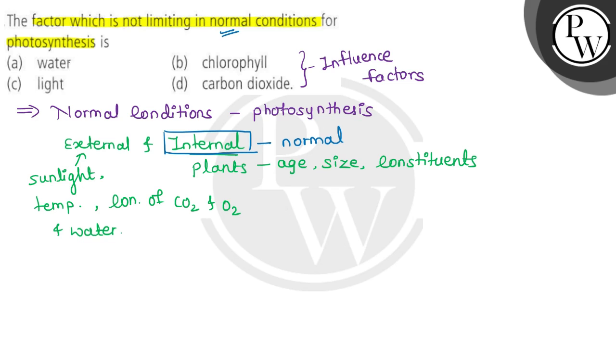Obviously, options A, C, and D—which are water, light, and carbon dioxide—are all external factors. These are limiting factors in normal conditions.